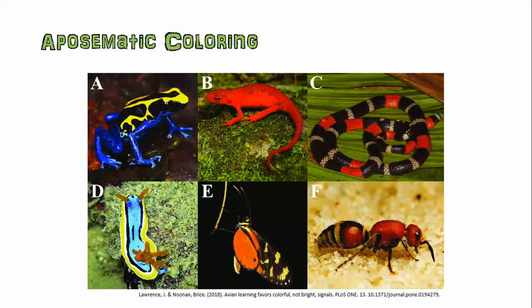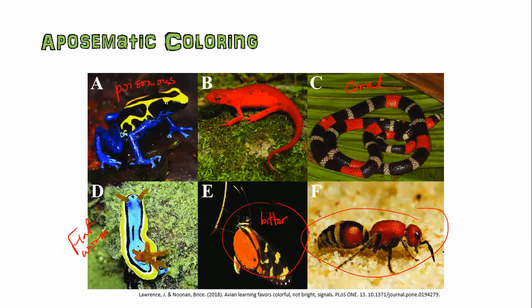Here are a bunch of examples of aposematic coloring. These organisms are all brightly colored, indicating that they are dangerous — or in the case of a butterfly, maybe just really bitter or nasty tasting. Predators may have an instinctive aversion to these brightly colored prey, or they may have learned from a bad experience. In some cases this coloring can be an indication of toxicity — like a coral snake, a poisonous frog, a flatworm, or an insect that looks like a bee and an ant had a homicidal baby. If you see anything that brightly colored, don't touch it.